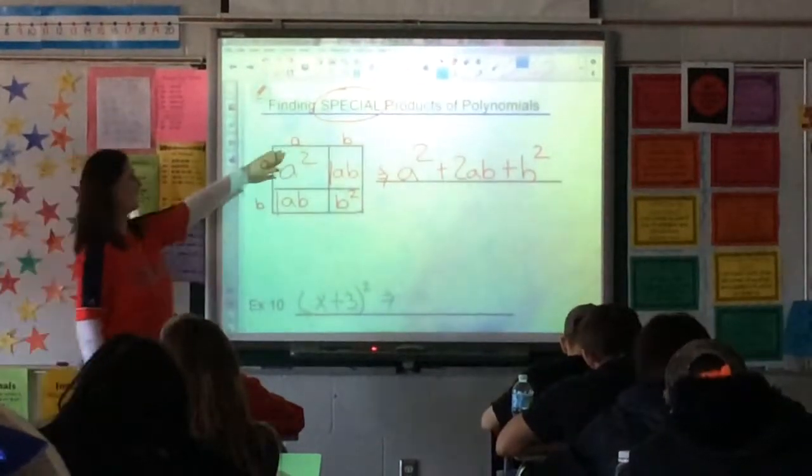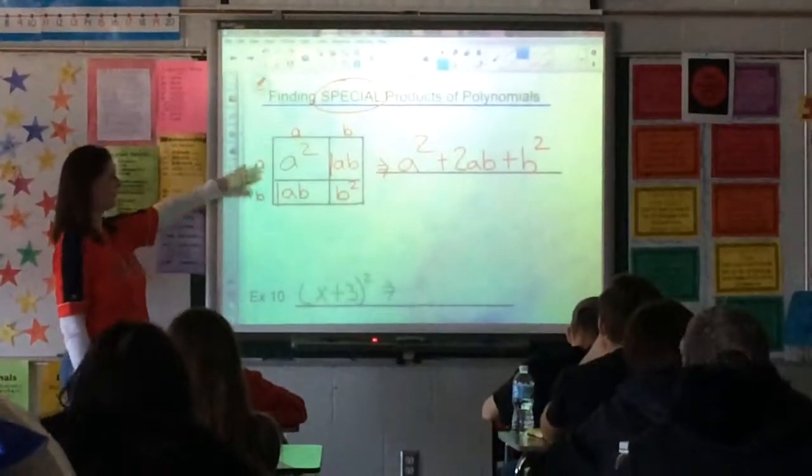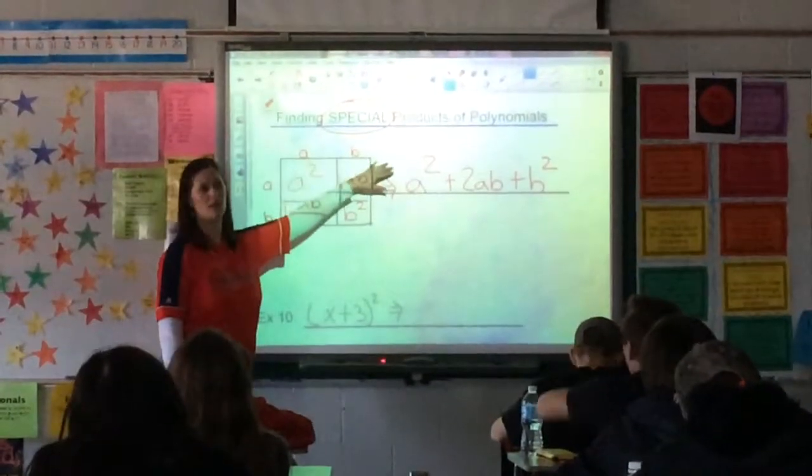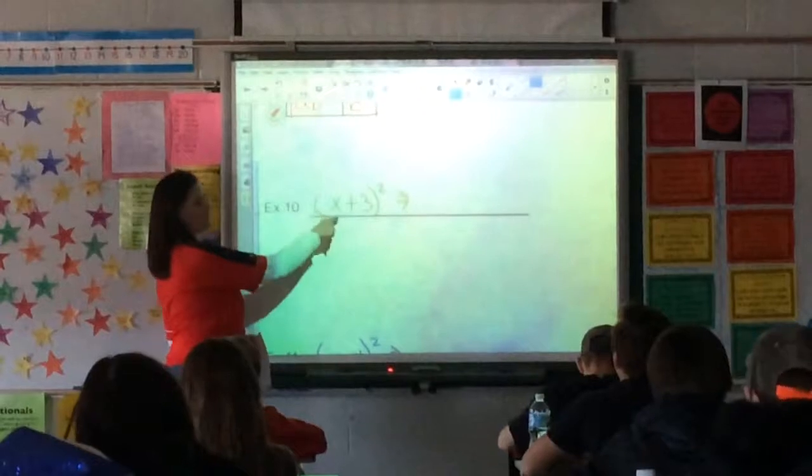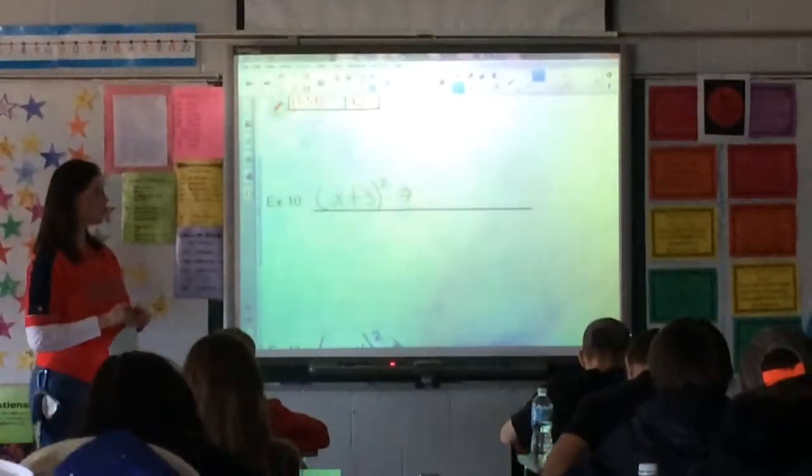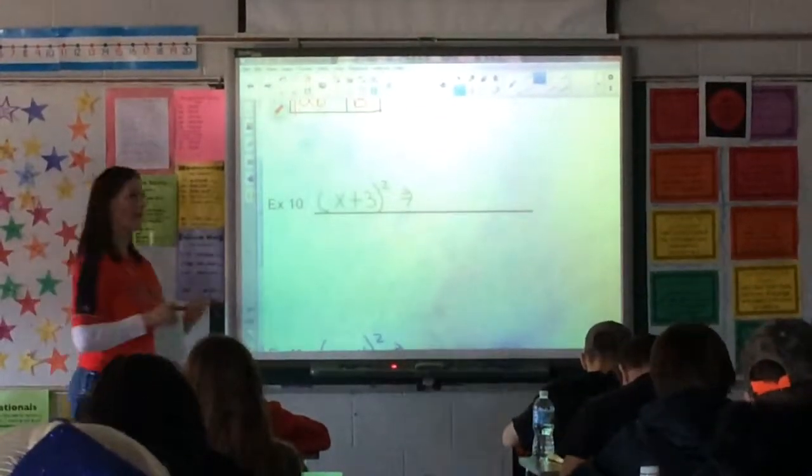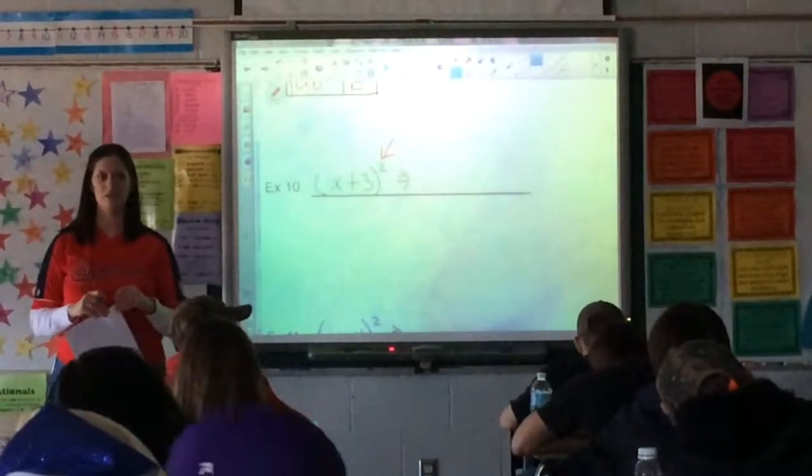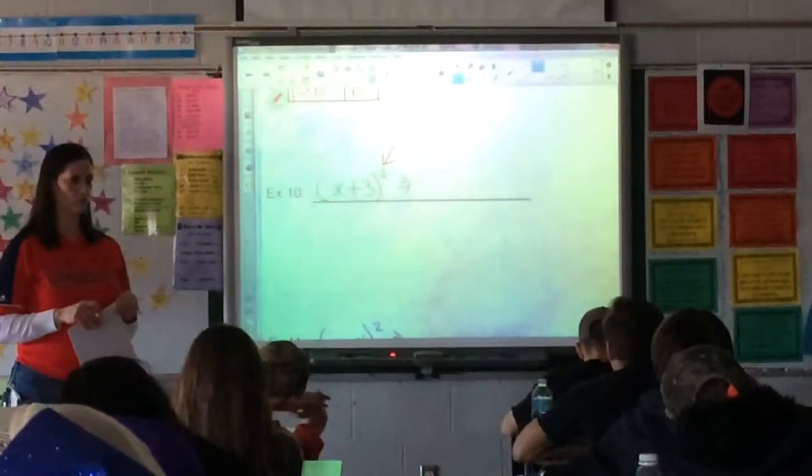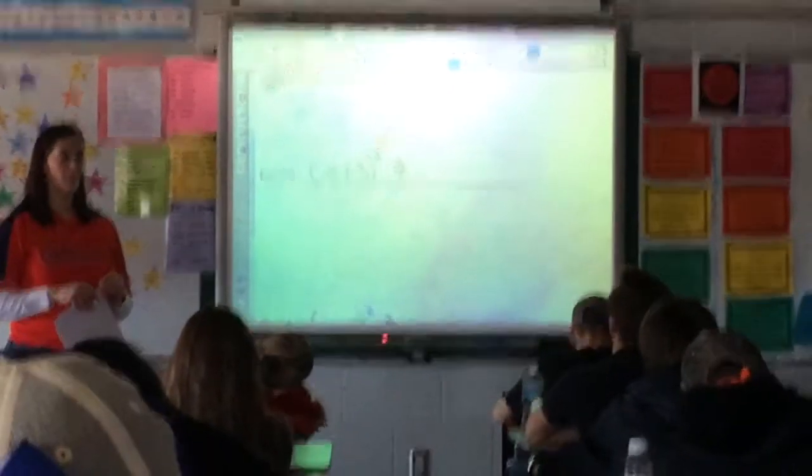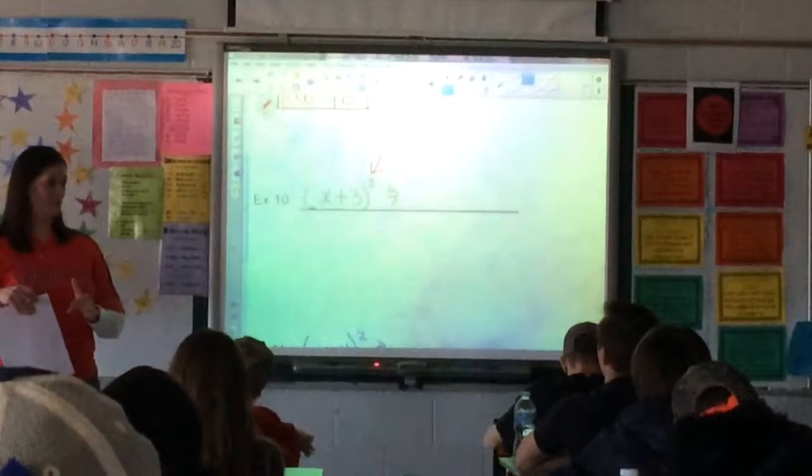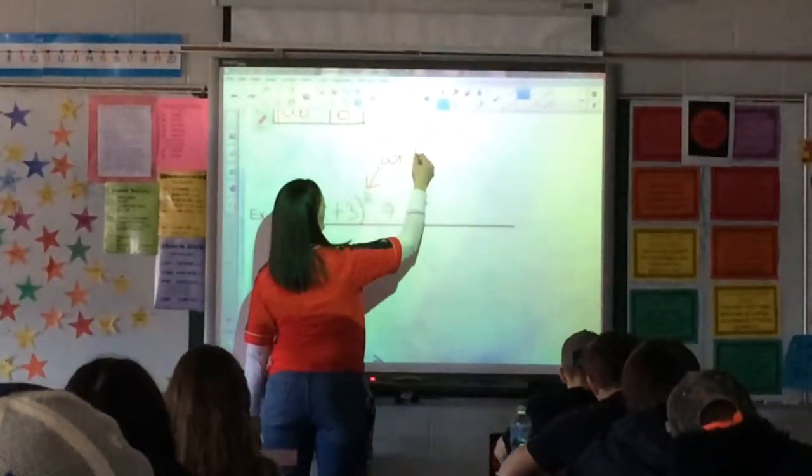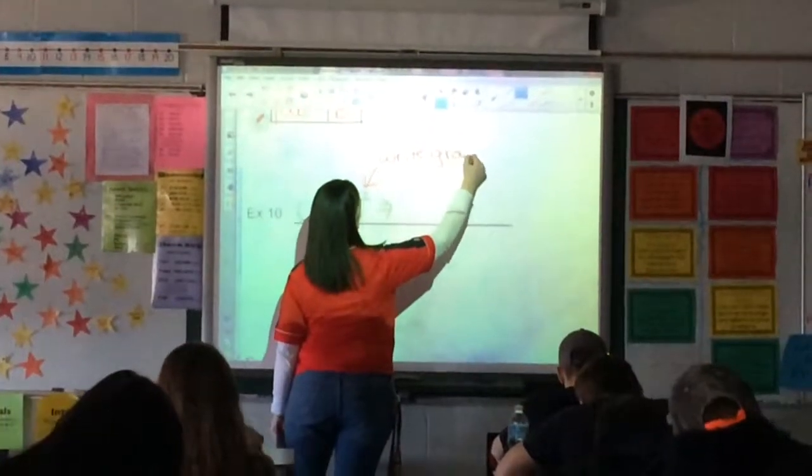Now, notice that when I set this up in my punnett square or my four boxes, the side ingredients is exactly the same as the top ingredients. Which is what's happening in these kind of problems. And you saw these last night on your homework. You may or may not have known what to do with them. But let's talk about that little 2. What does the power of 2 tell you to do? That 2 timed by itself. Yes?